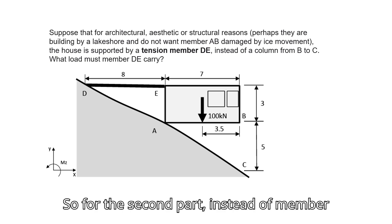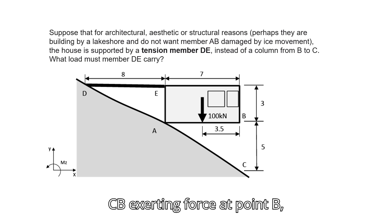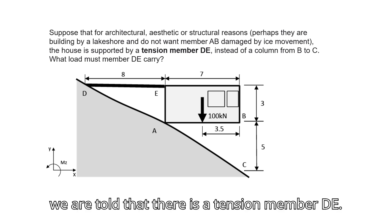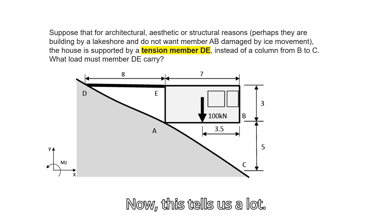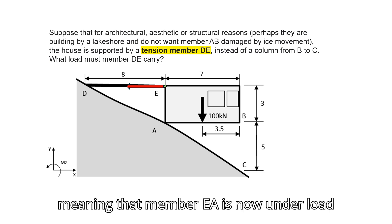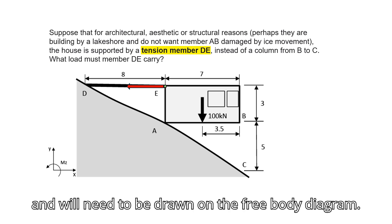So for the second part, instead of member CB exerting force at point B, we are told that there is a tension member DE. This tells us a lot. First of all, it is tensile, meaning that the direction of the force is going away from the structure. Additionally, it applies to point E, meaning that member EA is now under load and will need to be drawn on the free body diagram.